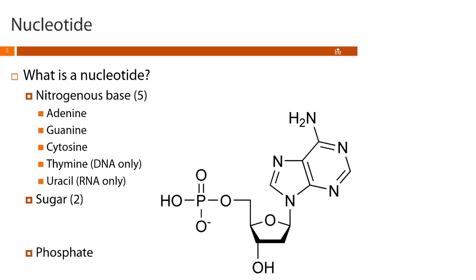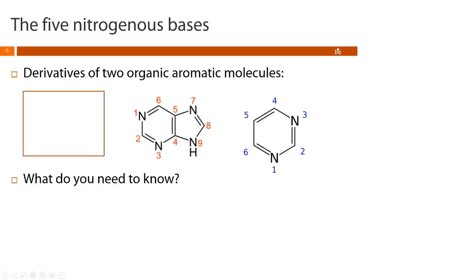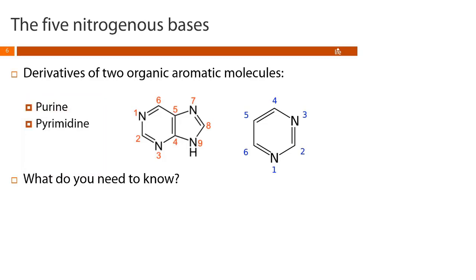There are two sugars: ribose and deoxyribose. This is where the names ribonucleic acid and deoxyribonucleic acid come from. RNA only contains ribose and DNA only contains deoxyribose. Whether talking about RNA or DNA, we still have the same phosphate group. Our five nitrogenous bases are all derivatives of two organic aromatic amines: purine on the left, which has a nine-membered ring, and pyrimidine on the right, which has a six-membered ring.